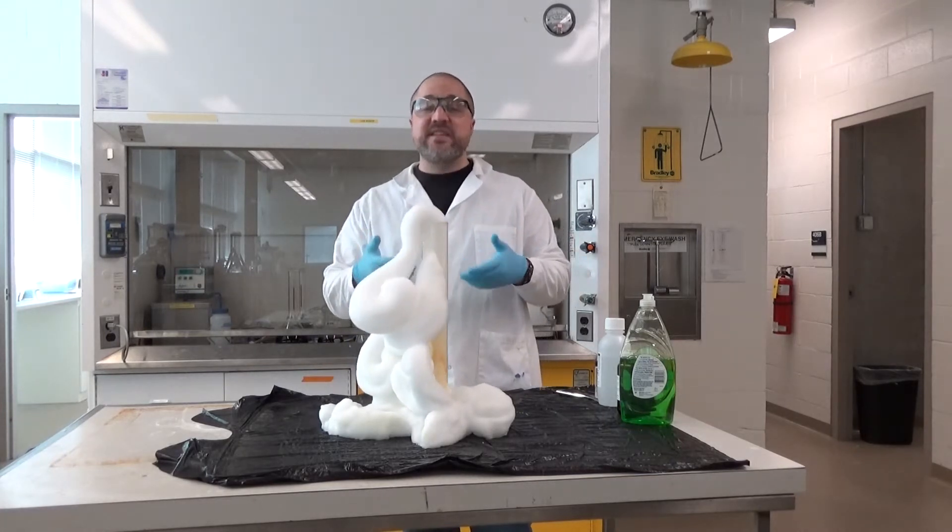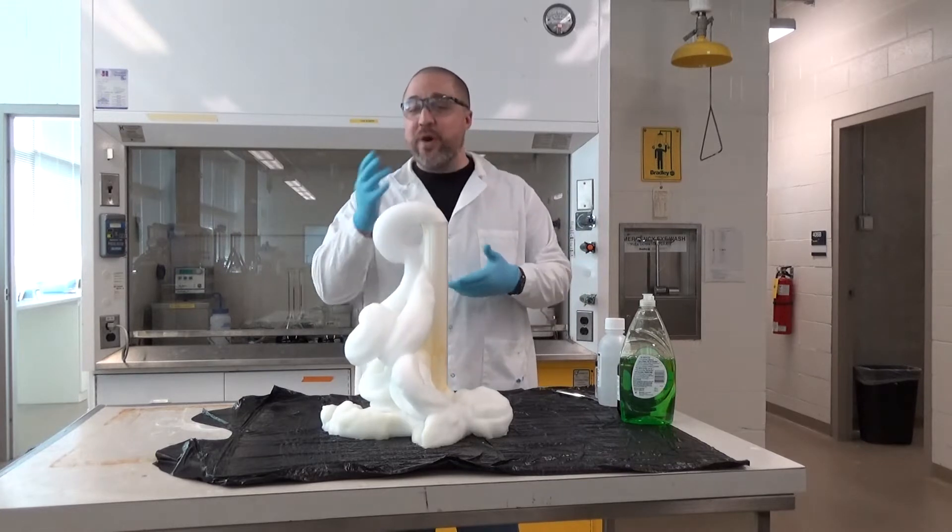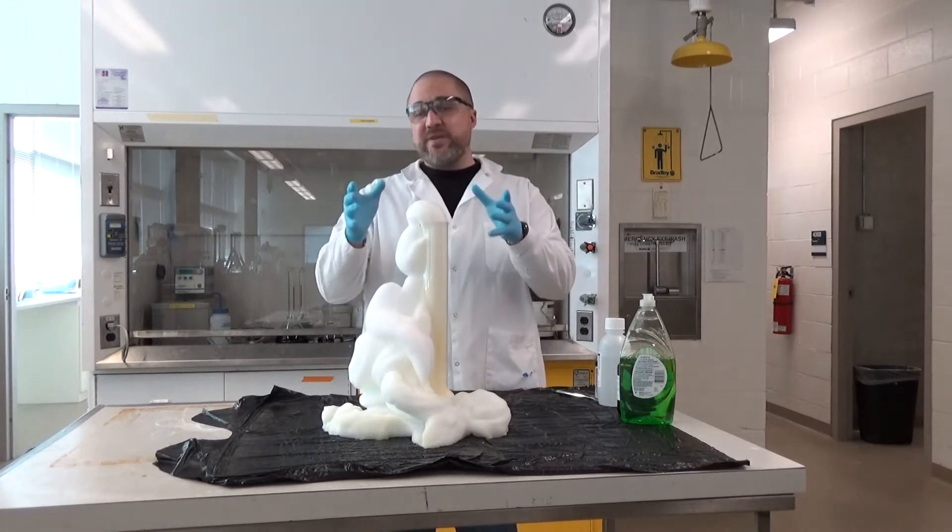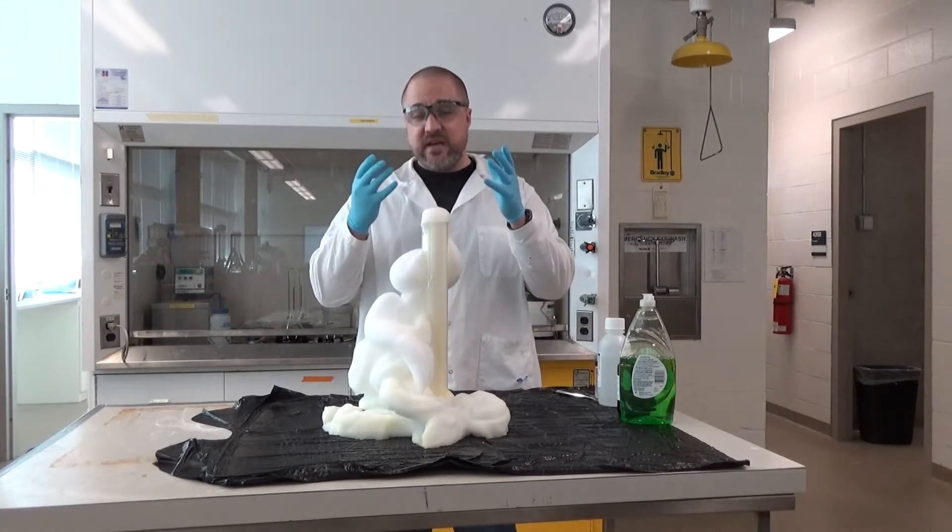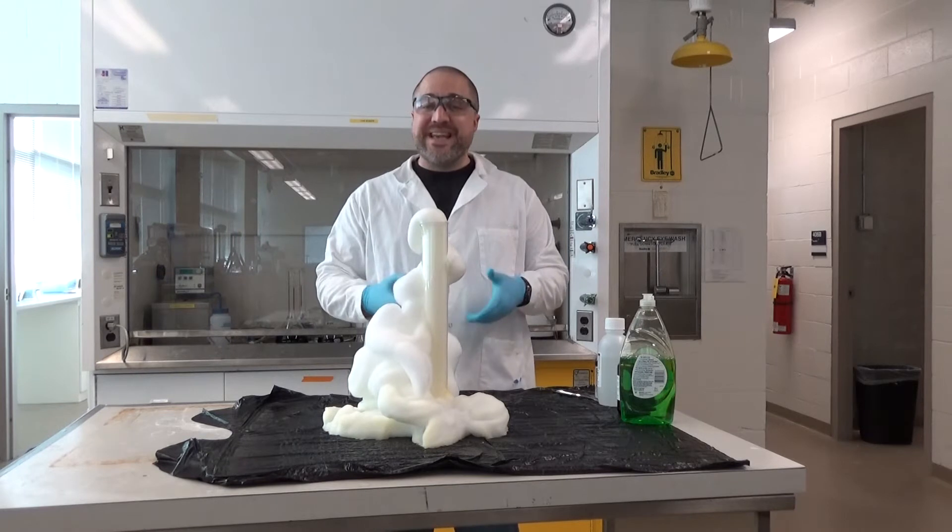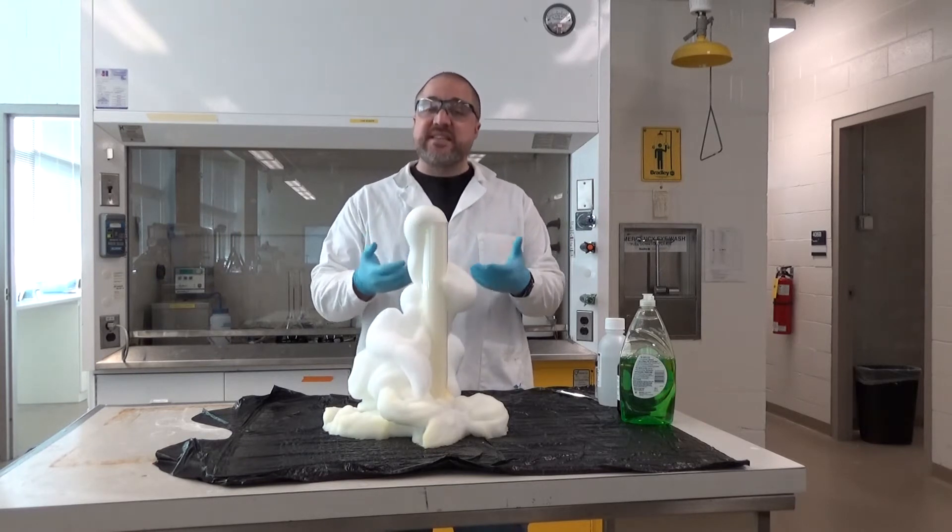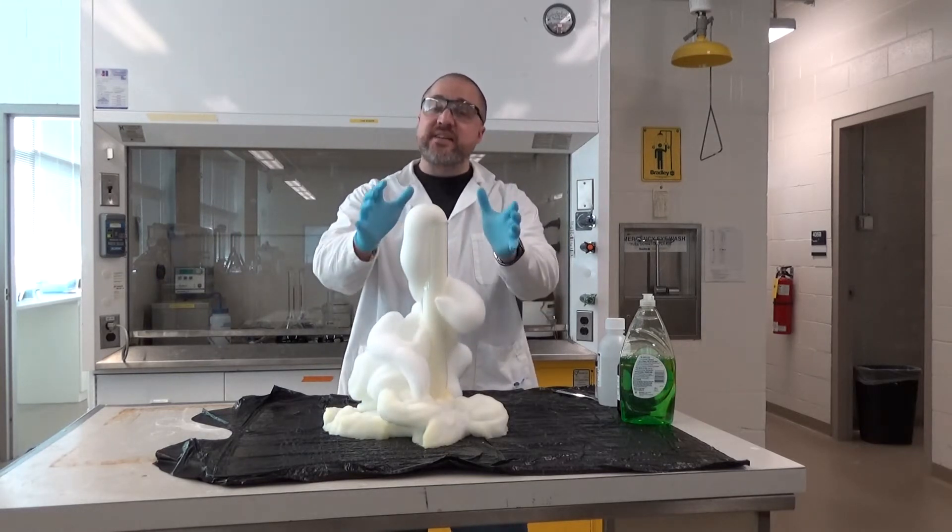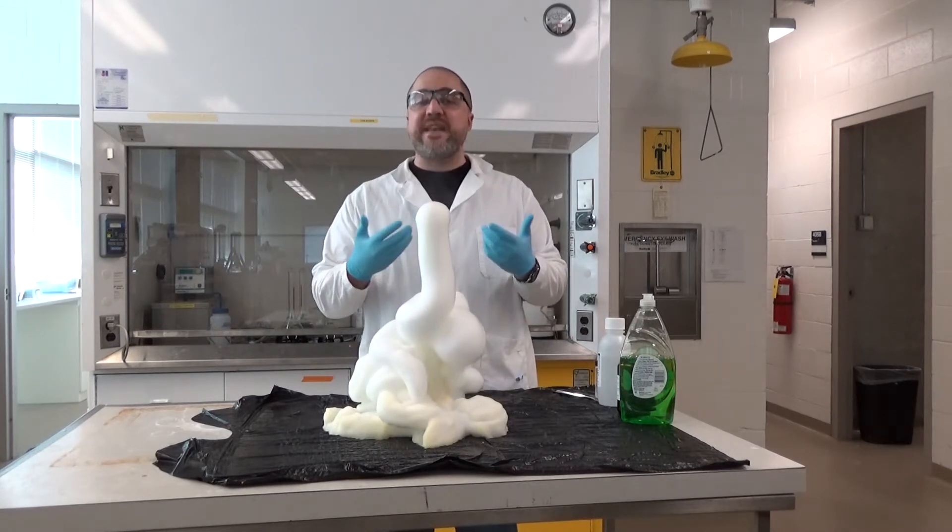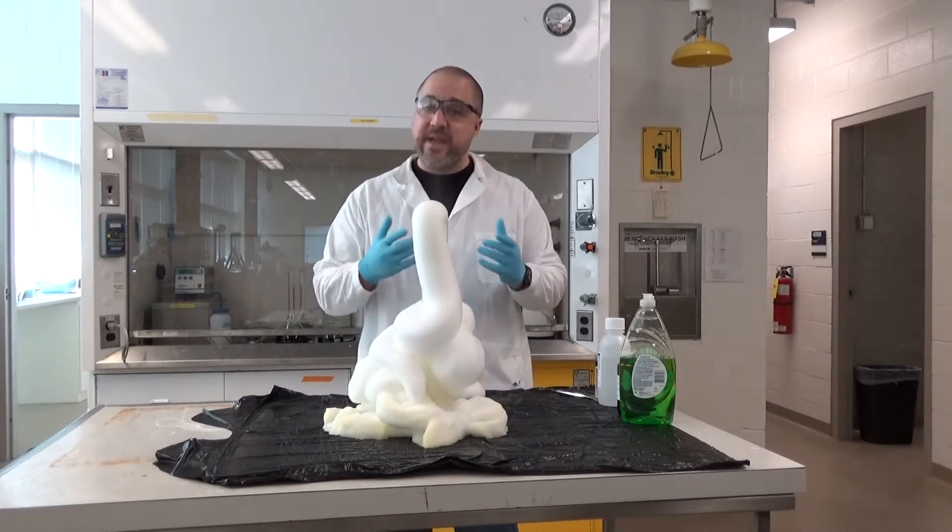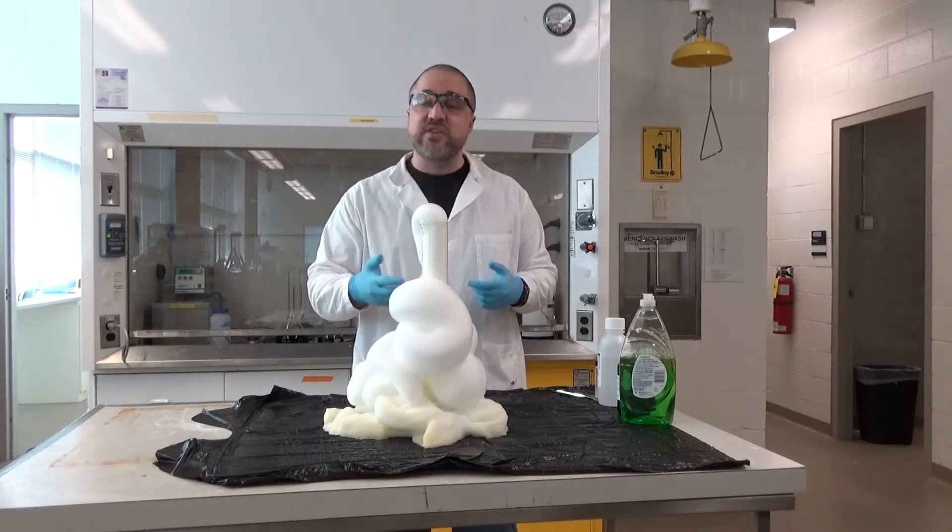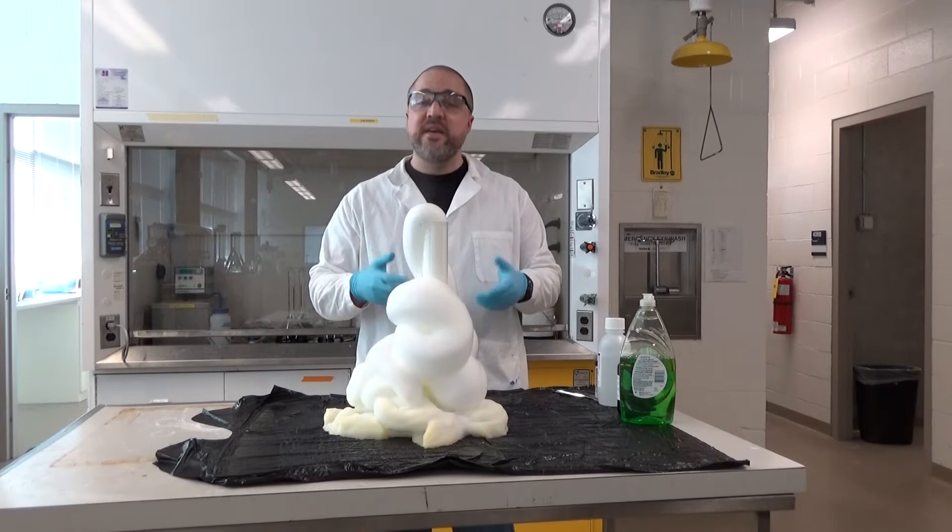This reaction is called elephant toothpaste because it kind of looks like what would be left over after you brush an elephant's teeth. You might notice there's steam coming out of this graduated cylinder of the reaction here. This is because this reaction is exothermic. It releases a lot of heat. I cannot touch the substance right now. So this is where our knowledge of matter and energy comes in again. We speed up reactions, but we have to understand what the end product is going to be so we can design things that are safe and efficient.